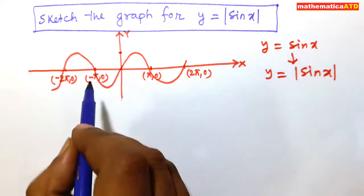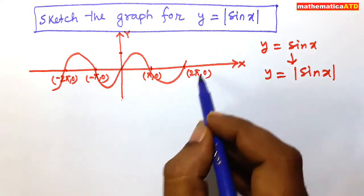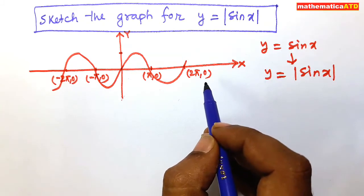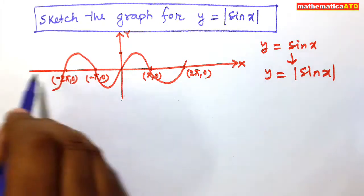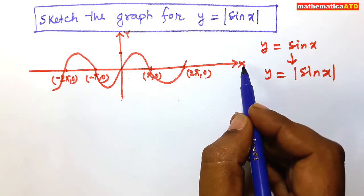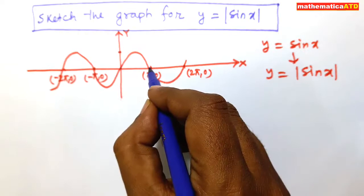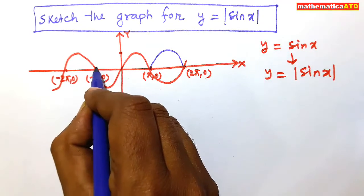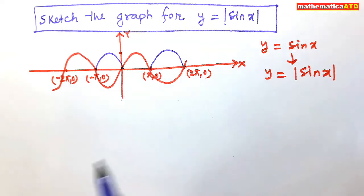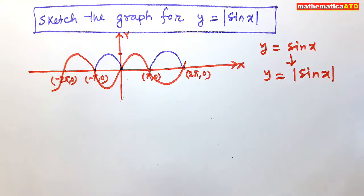The positive parts remain as they are, but the negative parts will get mirrored with respect to the x-axis. So the image of the negative parts will be reflected upward, like this. Ultimately you are getting the curve for y is equal to modulus of sin x.